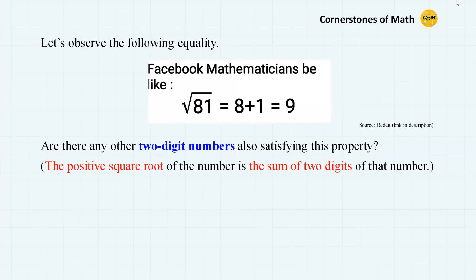Hello, and welcome to yet another video of Cornerstones of Math. Let's observe the following equality: the square root of 81 equals 8 plus 1, which equals 9. This is true.